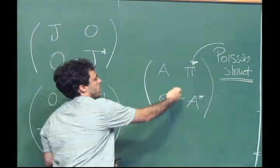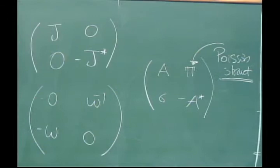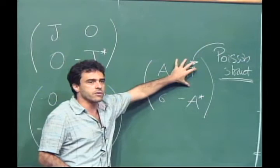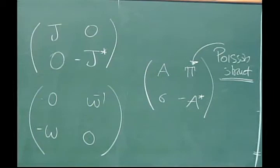So you can look at sub-bundles of T plus T* with certain properties and see that several different geometrical structures can be cast in that way. Another way — introduced by Hitchin — is to look at operators, just as you define almost complex or complex structures on manifolds. Usually a complex structure is an endomorphism of the tangent bundle that squares to minus the identity; you can copy this definition for T plus T* and impose compatibility conditions related to the two additional structures.